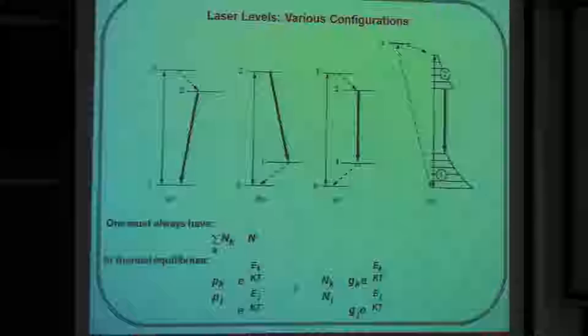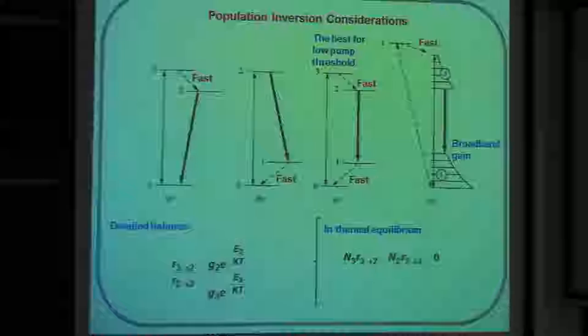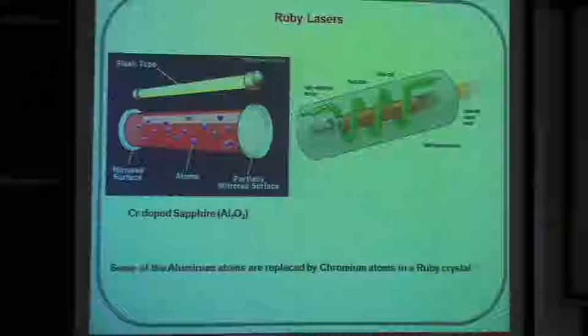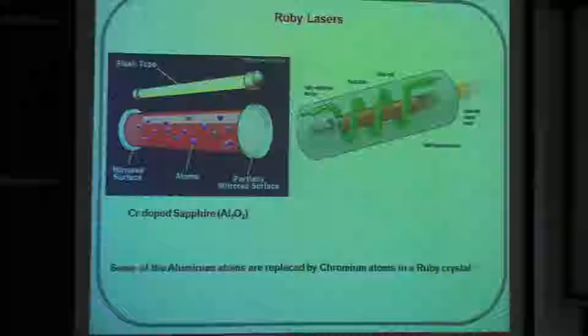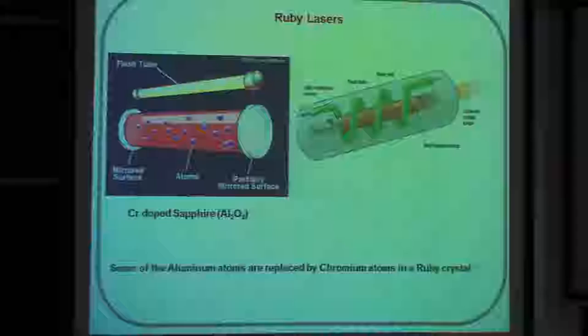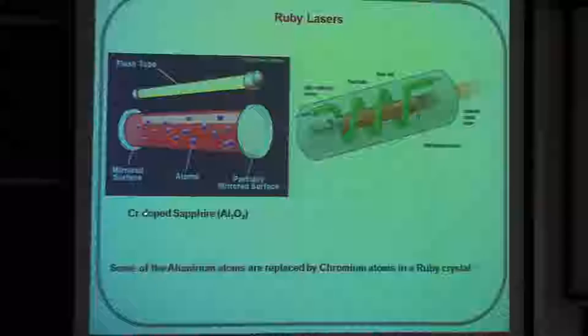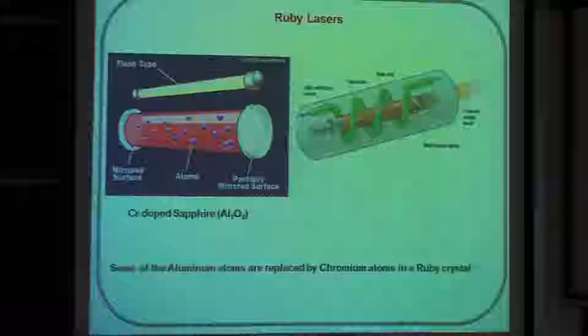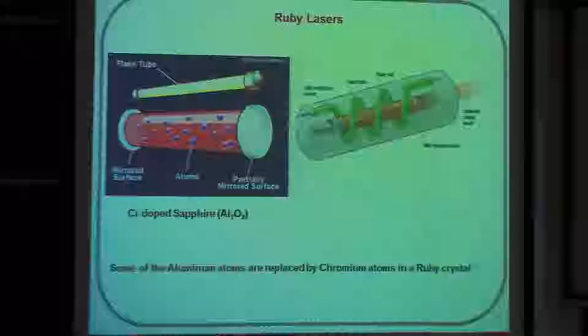Have you guys done examples of any real lasers so far in the course? No — so this is your first introduction. The first laser is the ruby laser, one of the first lasers to be demonstrated. Essentially the idea is that you start with a sapphire crystal — pure sapphire will be almost transparent — but you dope it with chromium.